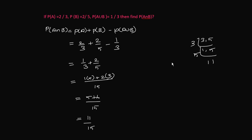P(A union B), formula number 1, use P(A union B) equals P(A) plus P(B) minus P(A intersection B). This is the usual formula.